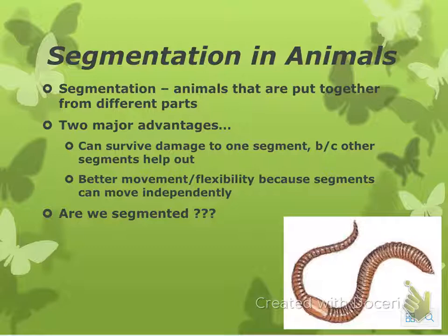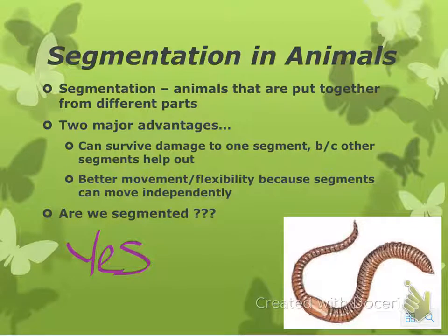And segmentation — a couple other little things we need to talk about. Segmentation in animals means they're put together in different parts. You can survive damage to one segment because the other segments help out. You also have better movement and flexibility because they can move independently. Are we segmented? Yes — you don't need legs to move your arms, or arms to move your body. You can move all these things independently of each other, and we can survive damage to one segment.